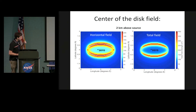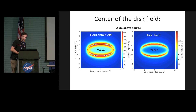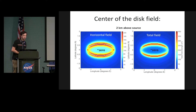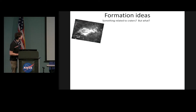An interesting consequence is that at the center of the disk at the surface, the field is actually zero. For infinitely magnetized sheets, the field goes to zero at the surface. So the most famous magnetic anomaly on the moon — if you were on the surface — you may actually measure zero total field because of the perfect symmetry of this feature. This is just a hypothesis that is consistent with results.